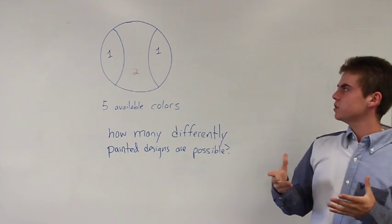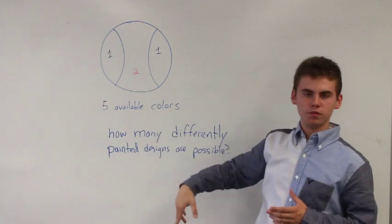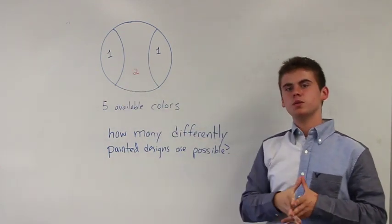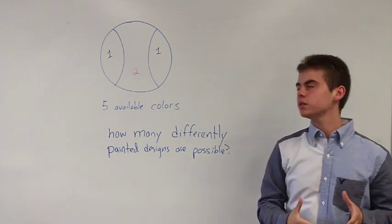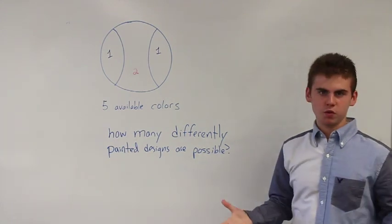So that means for every possible color here, you need to consider all the four colors that can be used with color one. Which means you need to do five times four to find the total number of combinations. And five times four is obviously twenty.